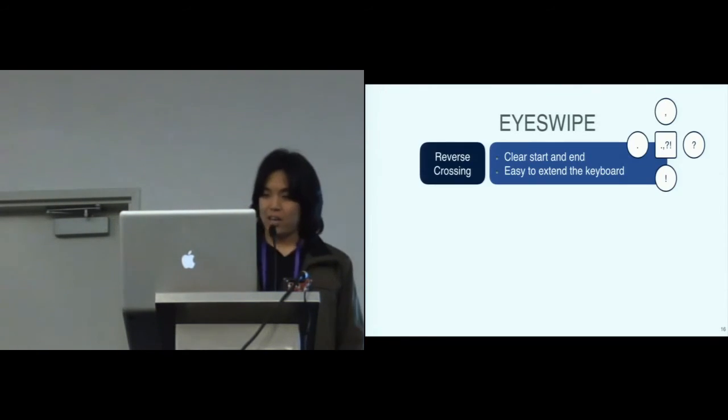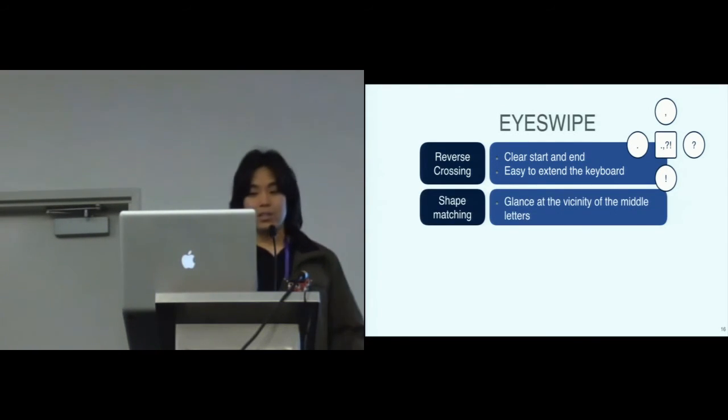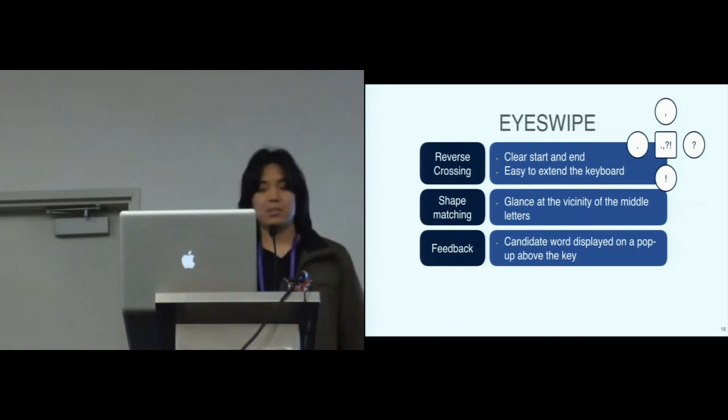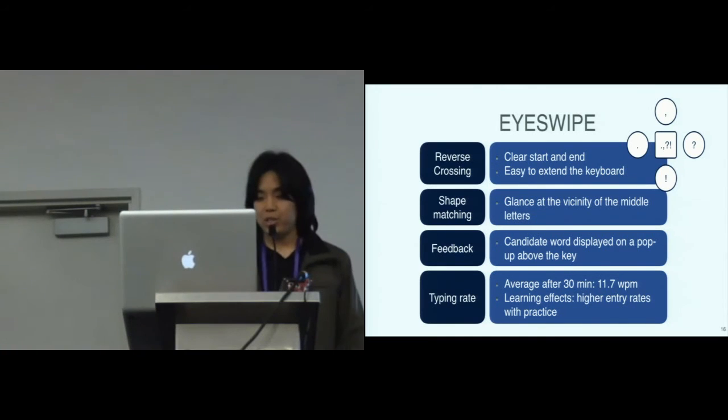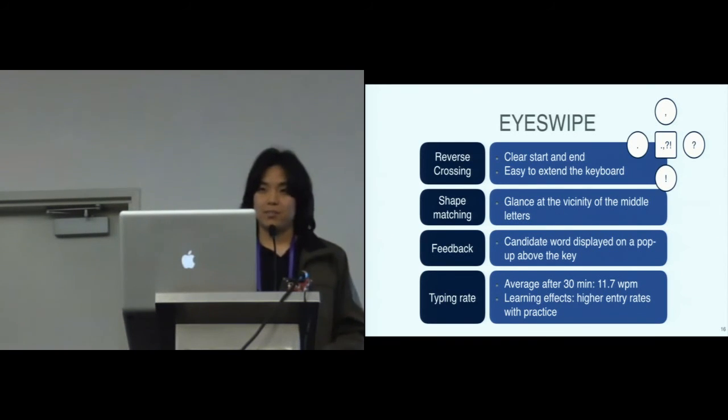Okay, so to wrap up, iSwipe uses reverse crossing to explicitly select the first and last letters of the word. And it not only increases the prediction accuracy, but also facilitates extending the keyboard, as in the punctuation key example. The use of shape allows the user to only glance at the vicinity of the middle letters without having to actually reach them. And regarding feedback, the word to be typed is displayed on a pop-up right above the key, so the user doesn't have to move her gaze away from the keyboard to verify it. In the experiment, participants achieved an average typing rate of 11.7 words per minute after 30 minutes typing with iSwipe. And considering the learning effects, we expect that higher rates are expected.